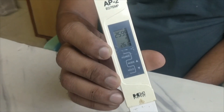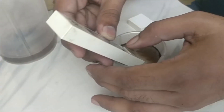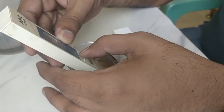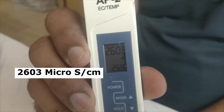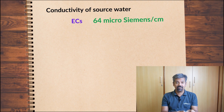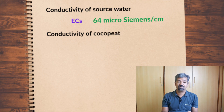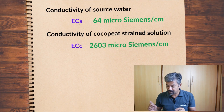Now let's measure EC first. I'm getting a measurement of 2599, which is about 2.5 millisiemens. Measuring again — 2603, which is about 0.003 higher than the last reading. So 2.6 is the number we can work with. This is in microsiemens: 2600. Remember, we also measured the conductivity of the water before we mixed — that was 64 — and we will subtract that later.